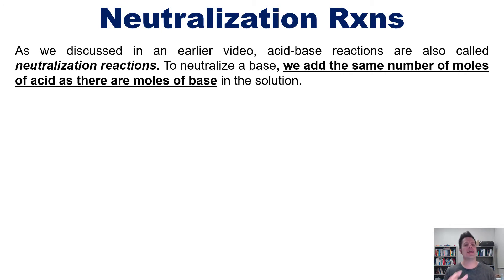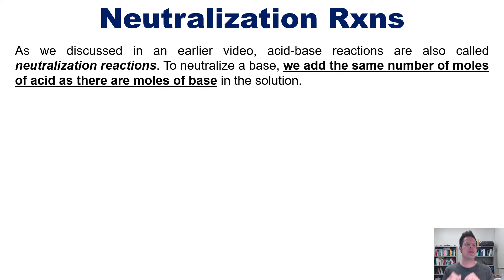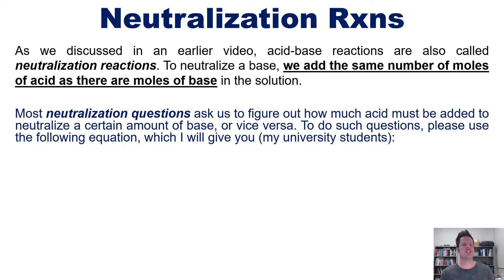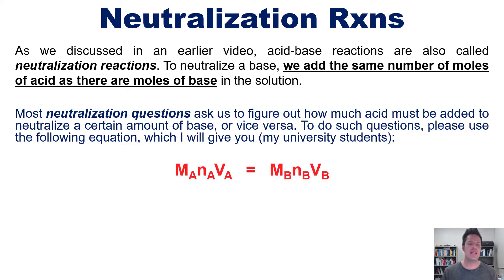As we discussed in an earlier video linked in the description below, acid-base reactions are also called neutralization reactions. To neutralize a base, we have to add the same number of moles of acid as there are moles of base in the solution. Most neutralization questions ask us to figure out how much acid must be added to neutralize a certain amount of base, or vice versa. To do such questions, please use the following equation: M_A × N_A × V_A = M_B × N_B × V_B.